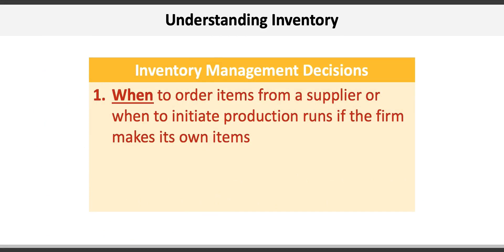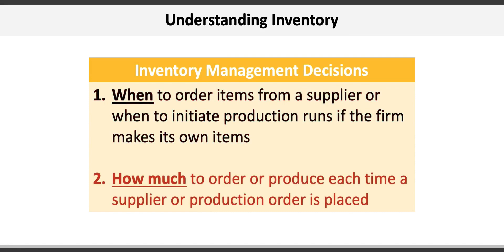Inventory managers deal with two fundamental decisions: first, when to order items from a supplier or when to initiate production runs if the firm makes its own items; and second, how much to order or produce each time an order is placed. Inventory management is all about making trade-offs among the costs associated with these decisions.